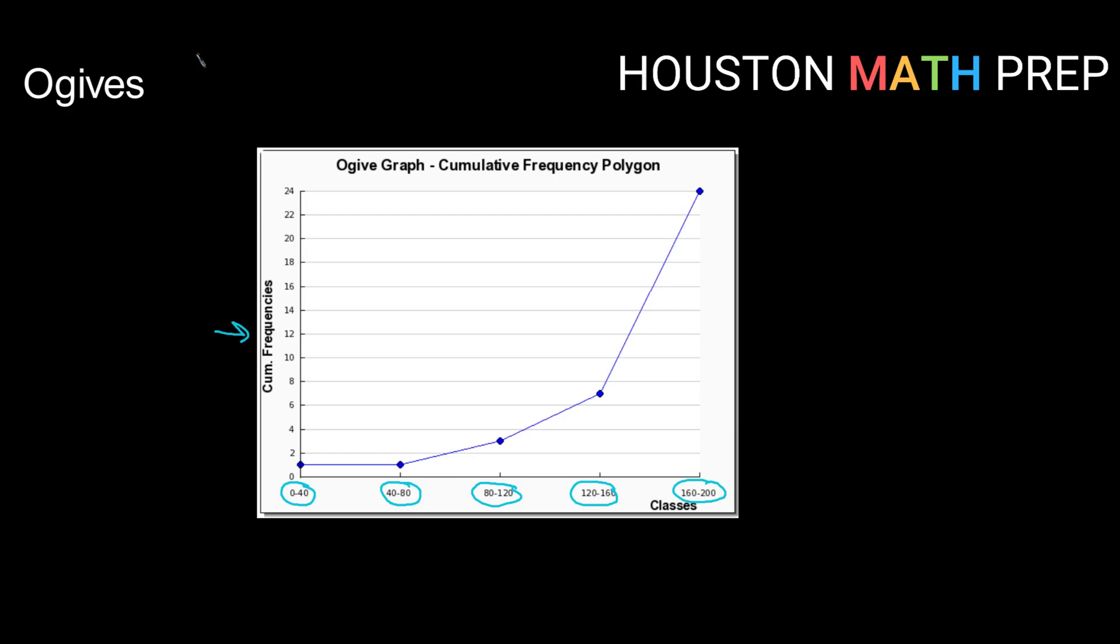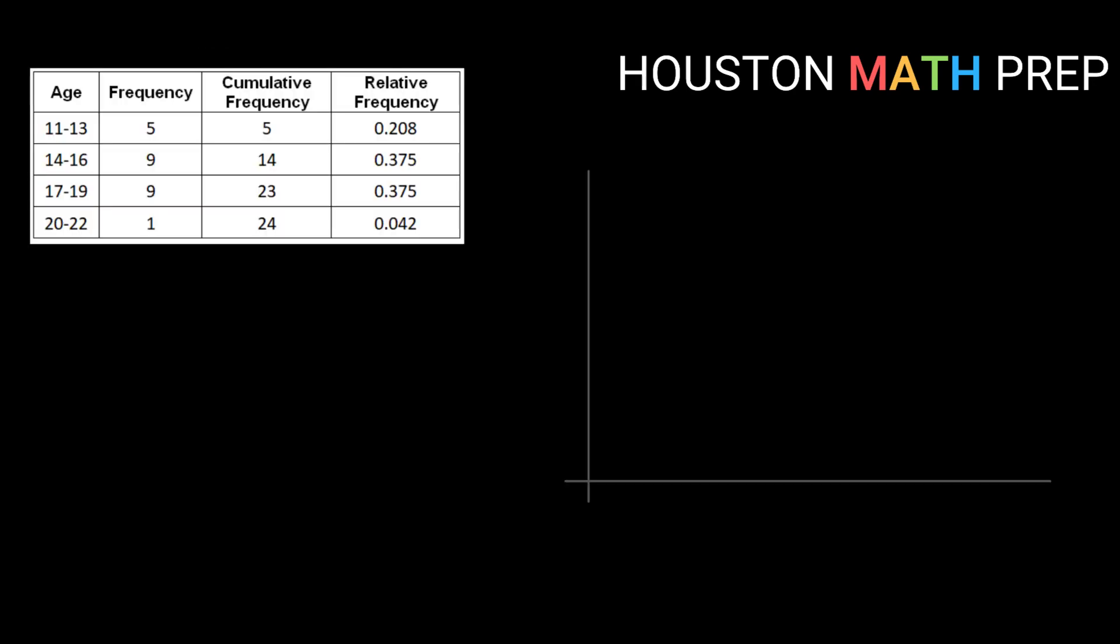So let's look back at our age data and create an ogive. Okay, so we know that ogive uses our cumulative frequency, so we're going to be using this middle column, our cumulative frequencies, and we're going to set up pretty much the same as we did with our frequency polygon.